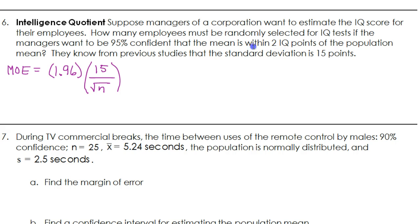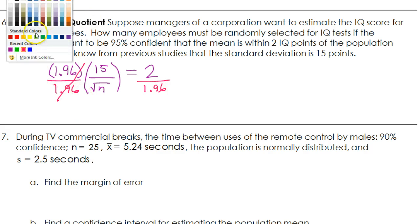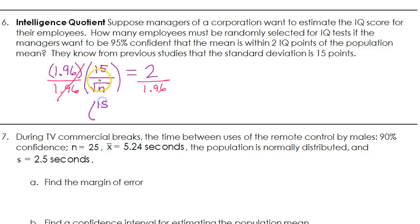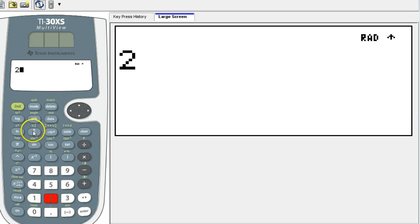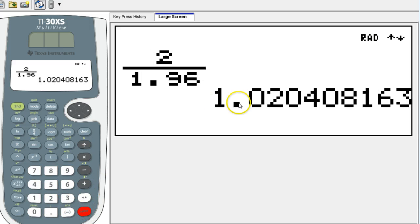This is the formula for margin of error where we do the z-score times the standard deviation divided by the square root of the sample size. They're asking us how many employees must be selected, so we're looking for N. They told us what the margin of error should be. We want the sample mean to be within two IQ points, so this margin of error should equal 2. So I would divide both sides by 1.96. That's going to leave me with 15 over the square root of N equals 2 over 1.96.